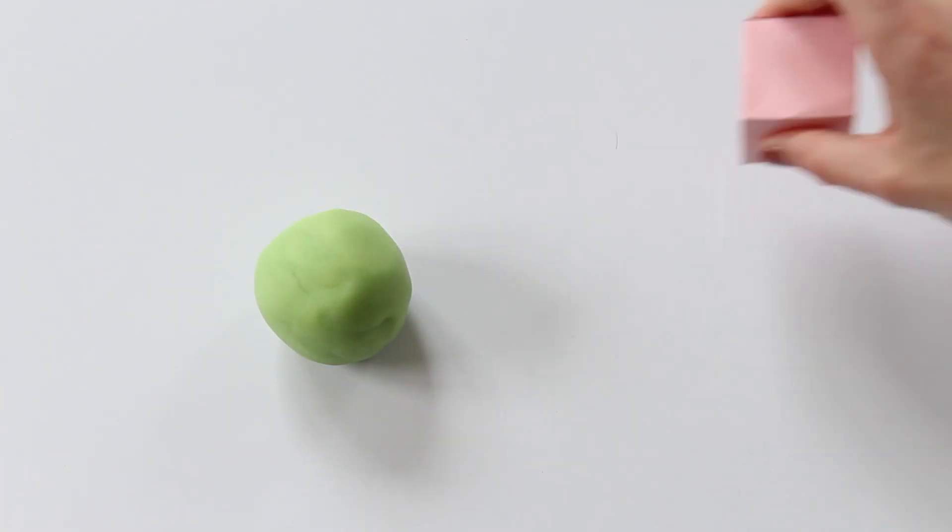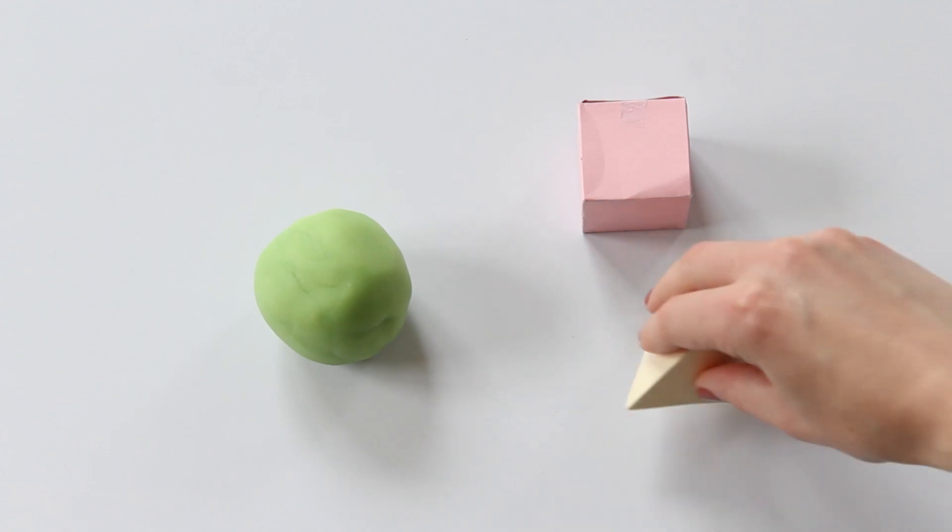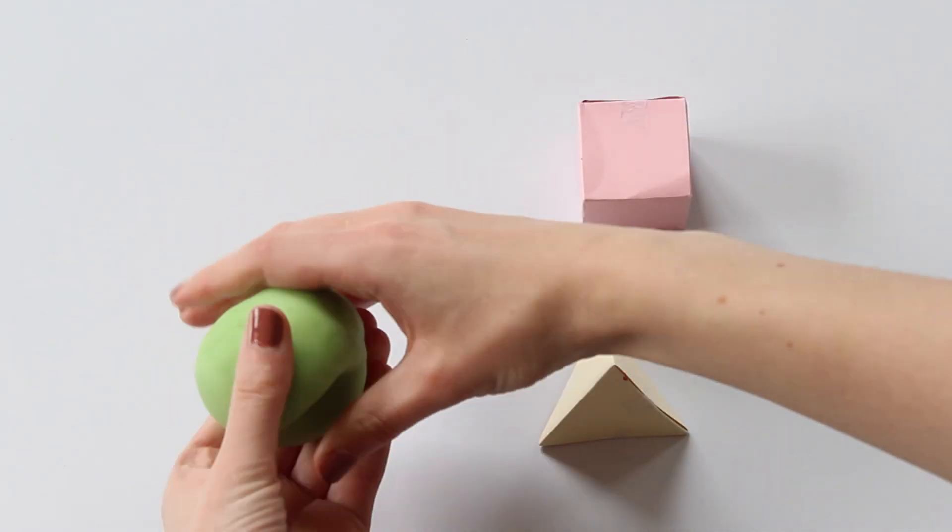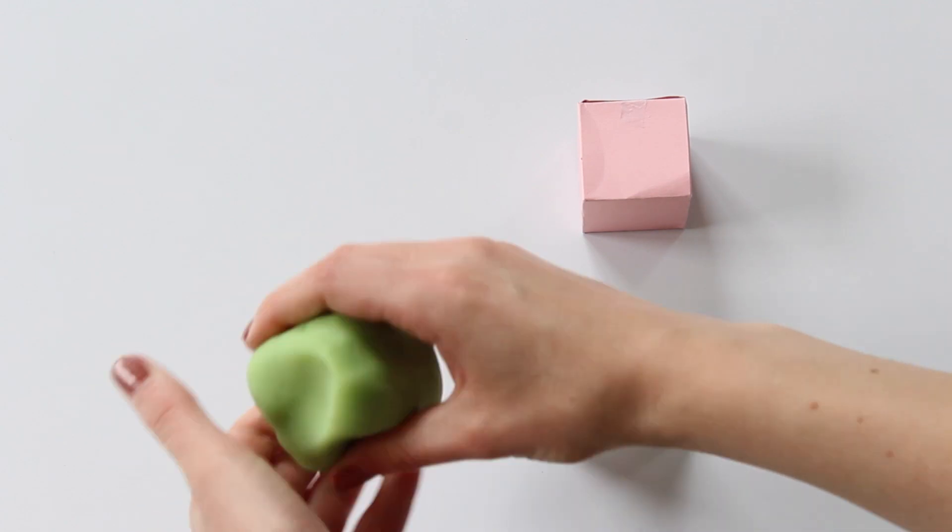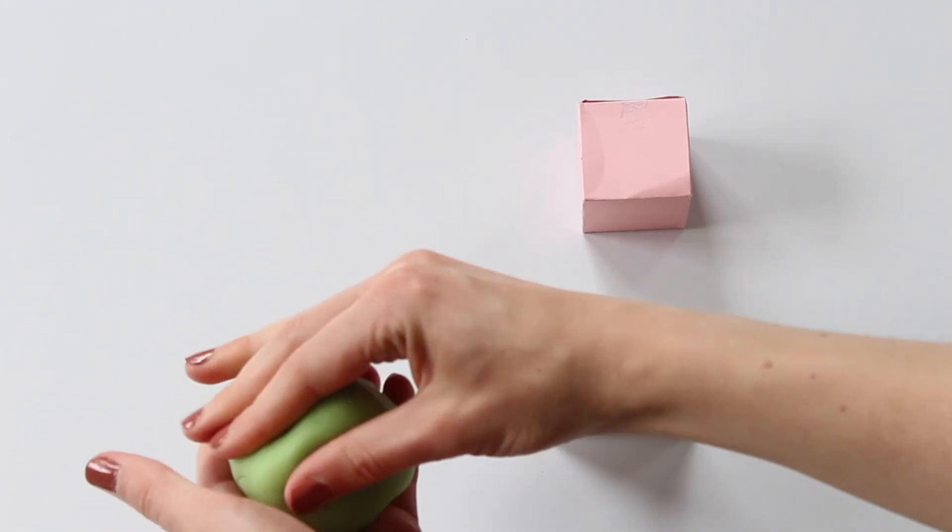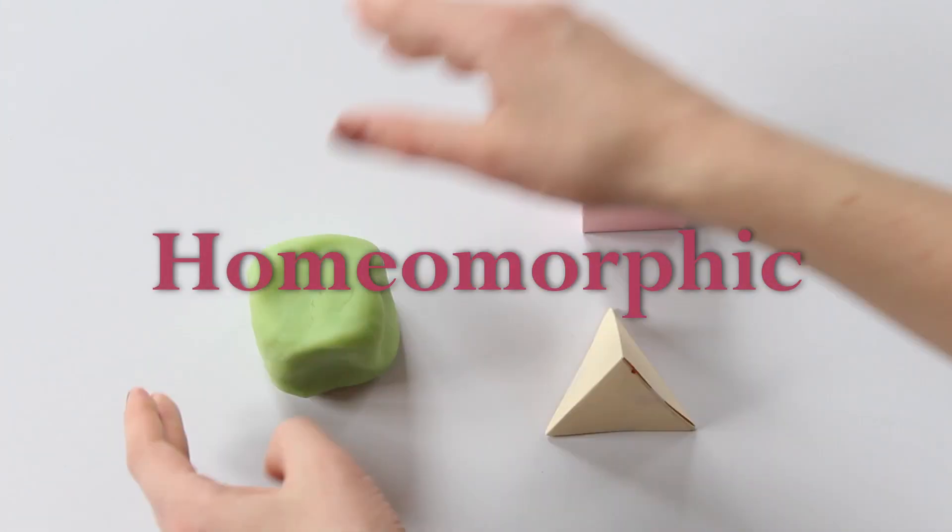I can continuously deform my sphere into a cube or a tetrahedron just by flattening out the sides. If we can get from one shape to another by continuous deformation, then these shapes are homeomorphic.